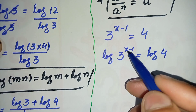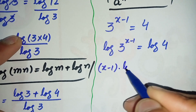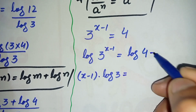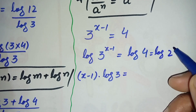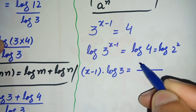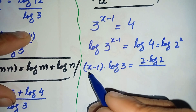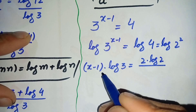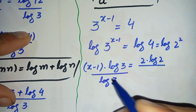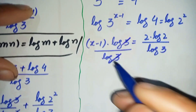Now we take log on both sides: log of 3 raised to power x minus 1 is equal to log of 4. We shift this power to the front of log, so it becomes x minus 1 times log of 3. On the right hand side we write 4 as 2 raised to power 2, then shift the 2 to the front: 2 times log of 2. To find x we divide both sides by log of 3, and log of 3 cancels, leaving x minus 1.